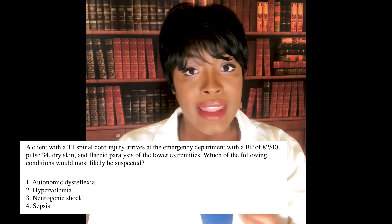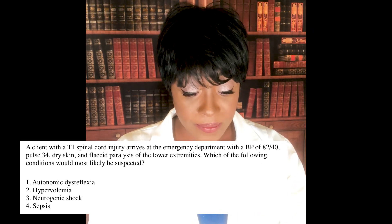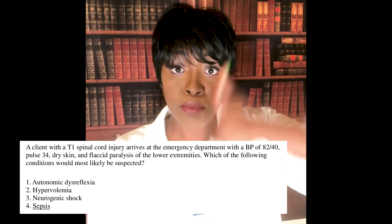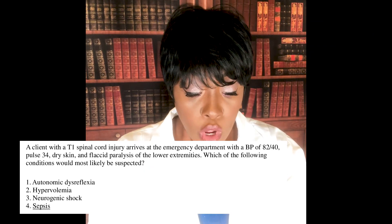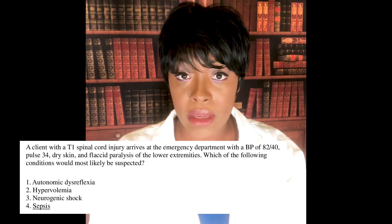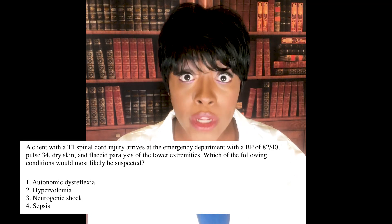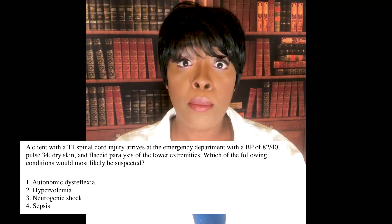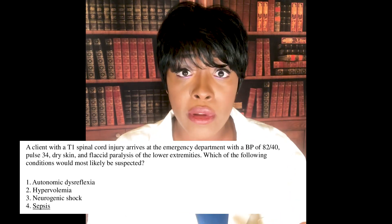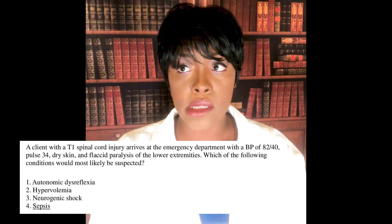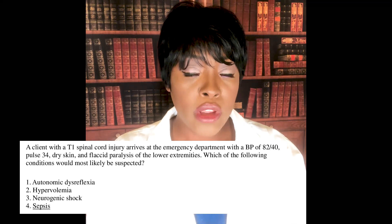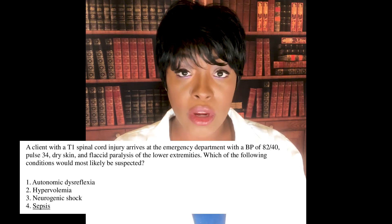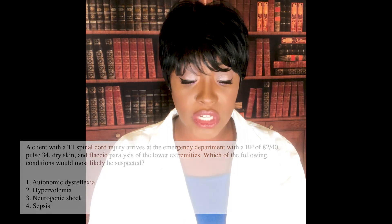Let's look at the other choices. One — autonomic dysreflexia: that blood pressure would have been through the roof, not low. Two — hypervolemia: if the patient has fluid overload, blood pressure and pulse would be up, not down. Four — sepsis: we'd see signs and symptoms of infection with elevated WBCs, and nothing in this situation mentions that. So the correct answer is neurogenic shock.